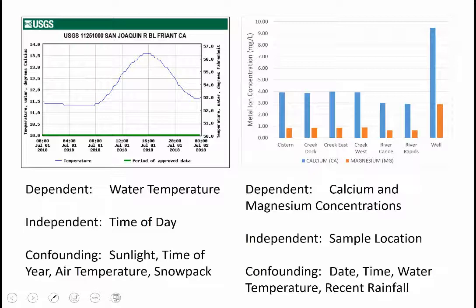On the right is a different type of graph, a bar graph. In this case, it's plotting the concentration of two metal ions, calcium and magnesium, as a function of the location where the water sample was collected. The dependent variable on the y-axis is the concentration of calcium and magnesium.